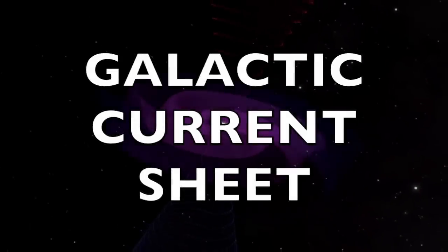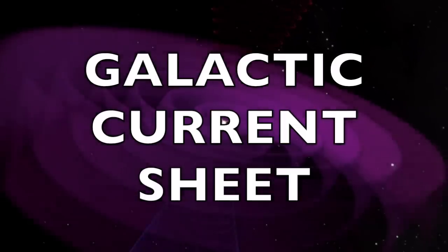The Galactic Current Sheet, the trigger of the ongoing solar system shift, including Earth's magnetic pole shift.